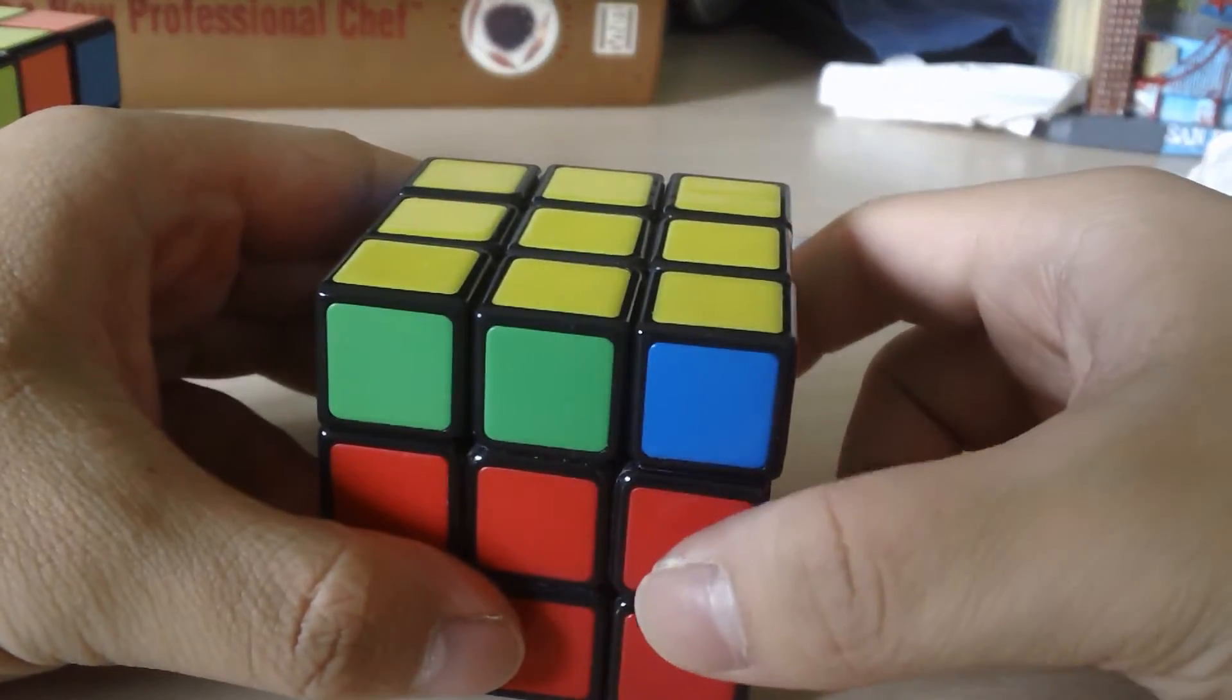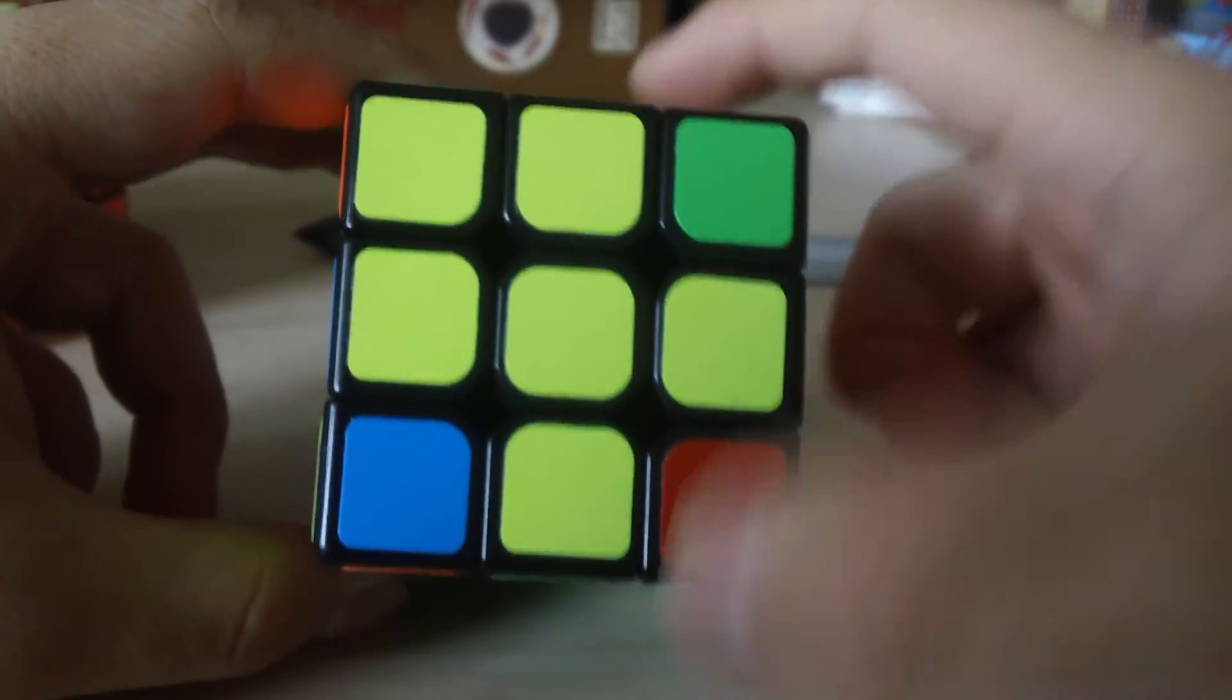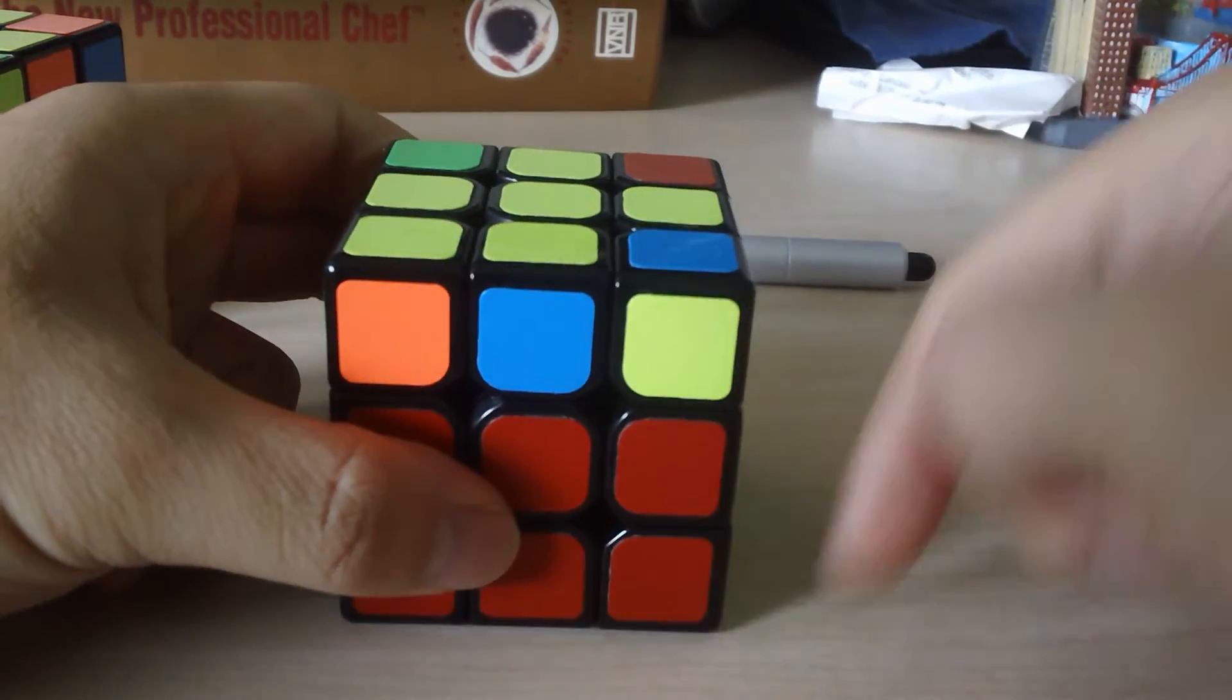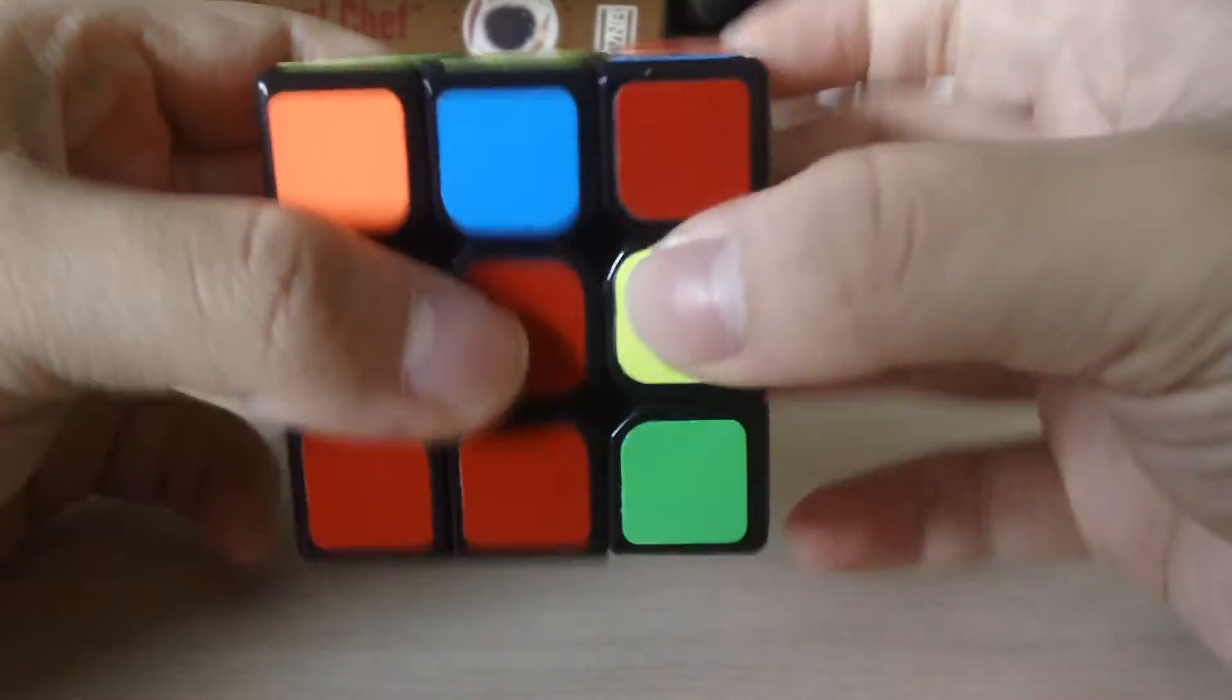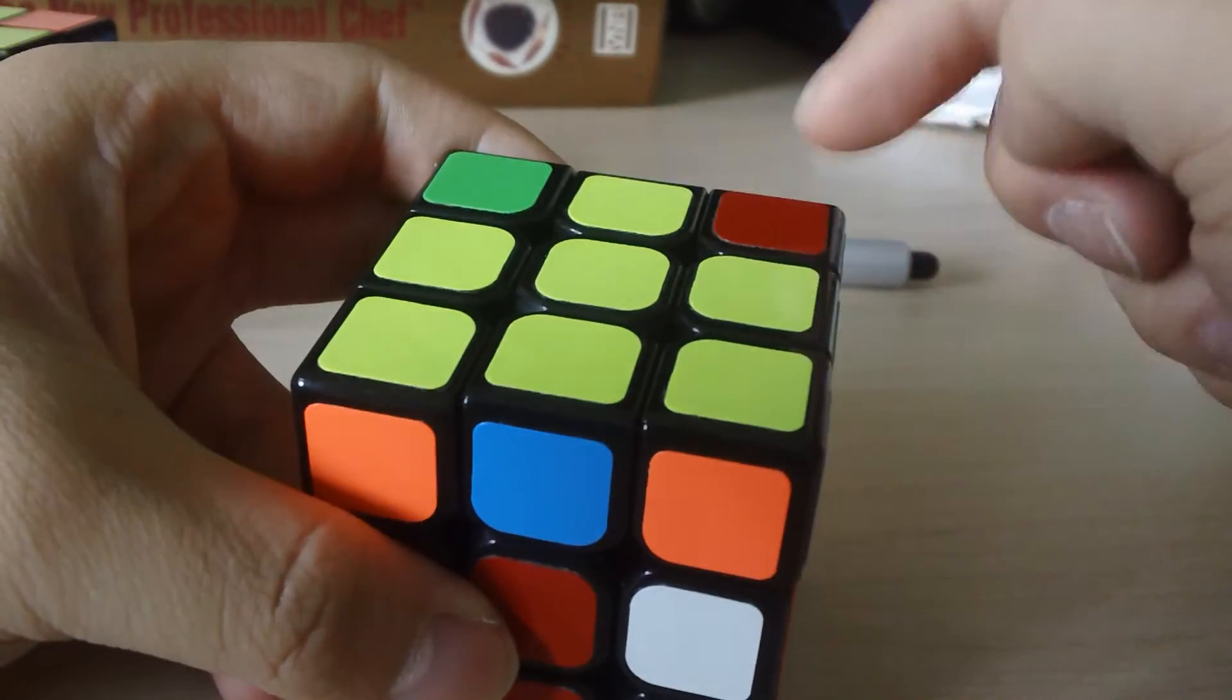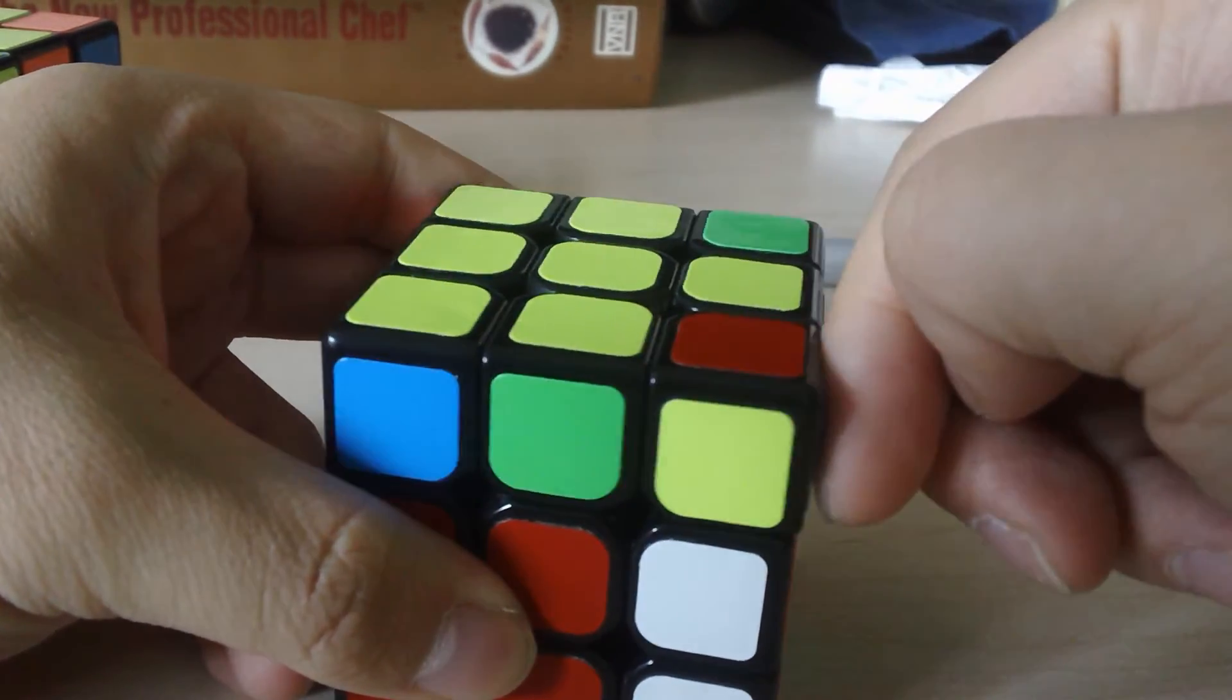So, let's do another example. In this case, we have three that need to be flipped. So, make sure that there's one in the right column. Just apply the algorithm. Turn the top face so that the next piece is in the right column. Do it again.